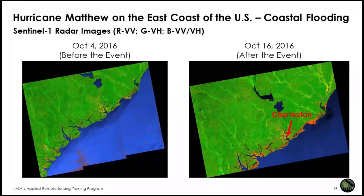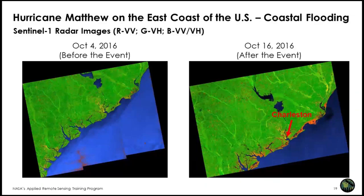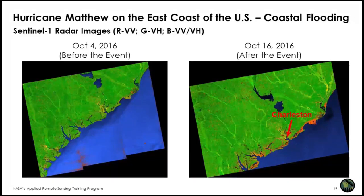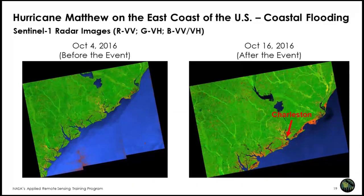Another similar event uses two Sentinel-1 radar images over South Carolina on the eastern coast of the United States. Hurricane Matthew caused major flooding in this area in October 2016. The false-color images show VV, VH, and the ratio of VV to VH for each date — before the event and shortly after. Orange areas that appear along the coastline after the event indicate inundation. In summary, SAR backscatter is not good at directly assessing flooding in urban centers, but can assess flooding at the human-natural interface within or surrounding urban areas.